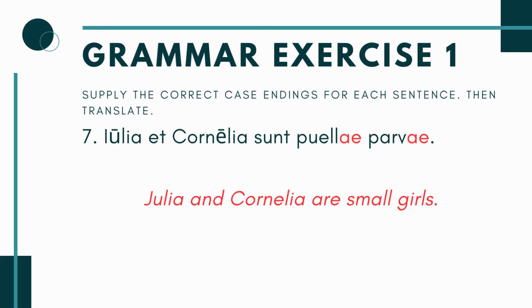Number 7: 'Julia et Cornelia sunt puella___ parva___.' When you have the verb to be you can say someone is something — think of it like an equal sign. The key word is sunt — they are. Since sunt is plural, and Julia and Cornelia together are a plural subject, we use plurals: puellae, and since puellae is plural, parvae will also be plural. Julia and Cornelia are small girls.